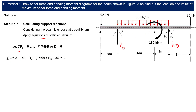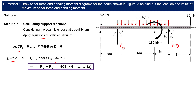Applying summation of Fy equal to 0: downward forces are taken as negative and upward forces as positive. So: minus 52 plus RB, minus 35 into 9 (total UDL load acting downward), plus RD, minus 36 equals 0. Solving this equation gives RB plus RD equal to 403 kilonewton.